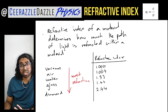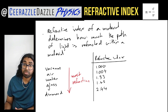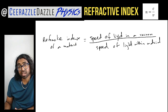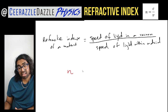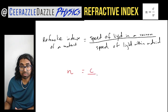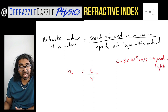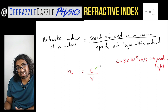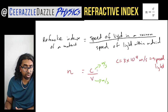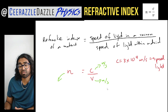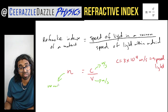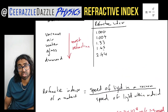Now let me explain where these values come from — there's a formula to work out the refractive index of a material. The refractive index n (or eta) equals the speed of light in a vacuum divided by the speed of light within the material: n = c / v. Don't forget c is a constant — c = 3 × 10⁸ m/s. The units are meters per second divided by meters per second, so the refractive index is dimensionless — there are no units.